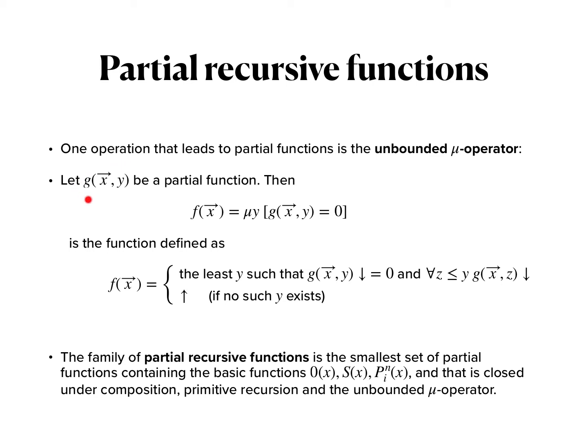So formally, we have a partial function given, and then the function f obtained from g by application of the μ-operator is defined as follows: It's the least y such that g(x,y) is defined and 0, and this is important, we also have to require that g is defined for all z less than or equal to y. If we don't require this, then the partial recursive functions that we define below will not be closed under this operator. And if no such y exists, then we just let f be undefined.